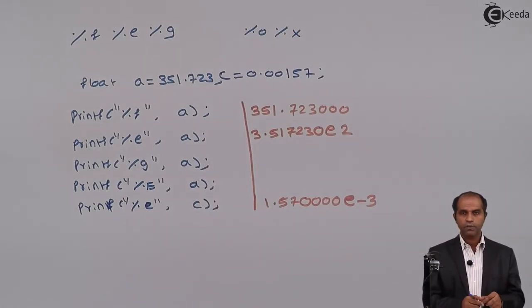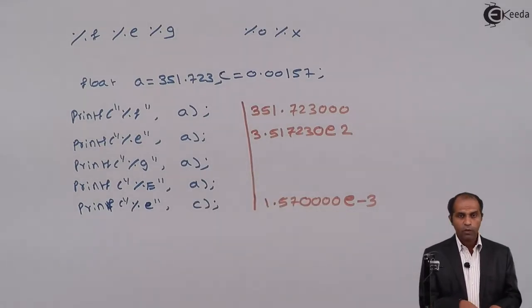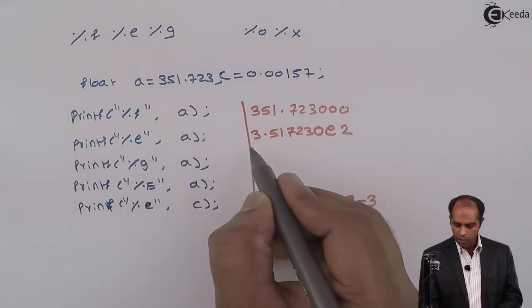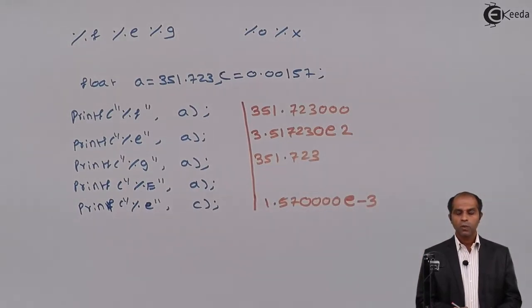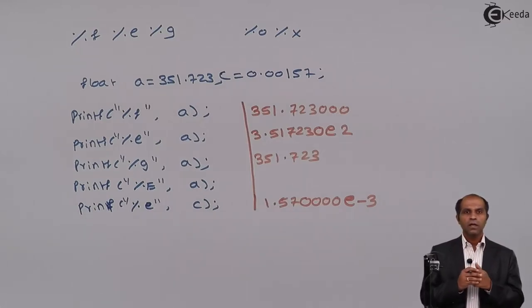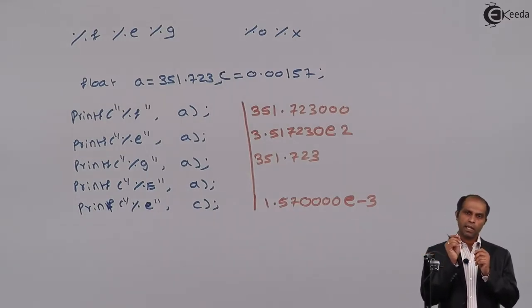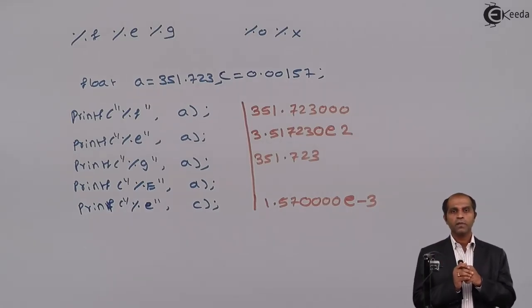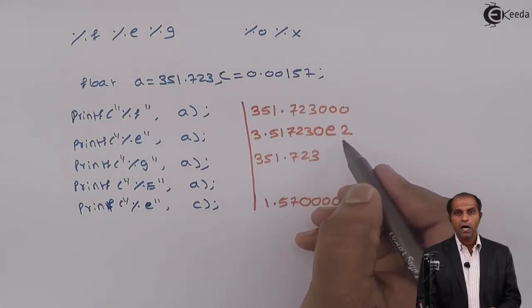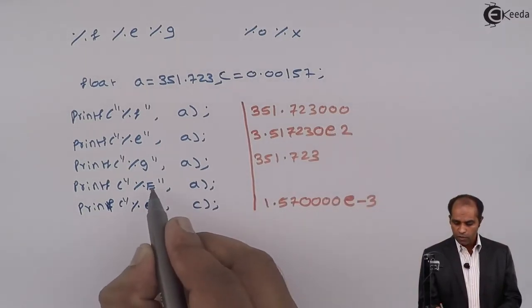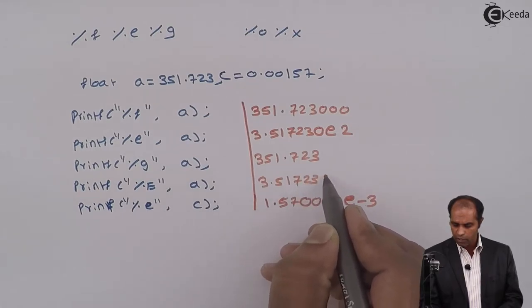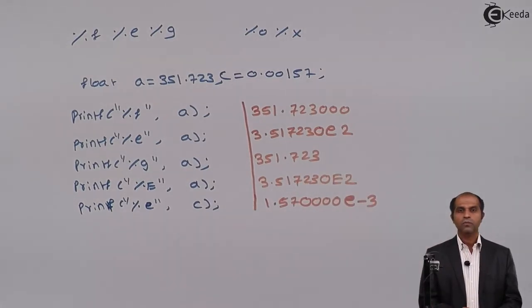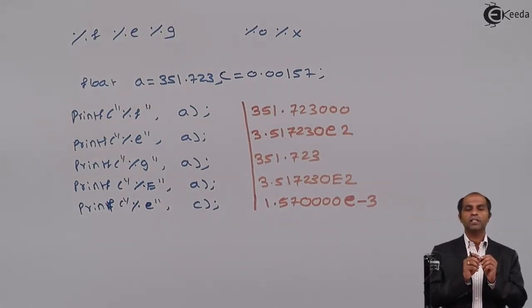The %g specifier displays the number without any additional zeros, so the number is displayed as it is — 351.723 for variable a. As for the difference between %e and %E: both display numbers in exponential format, but %E shows a capital E on screen instead of a lowercase e. So the output would be 3.517230E2 instead of 3.517230e2. E represents the base of 10.